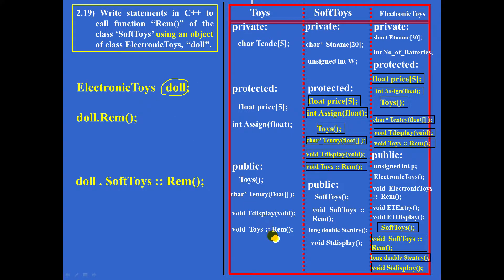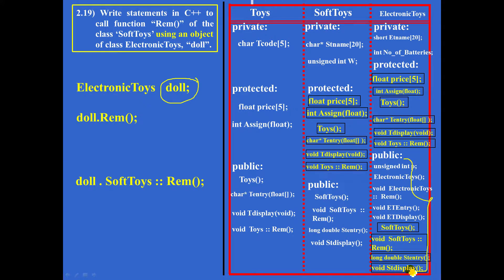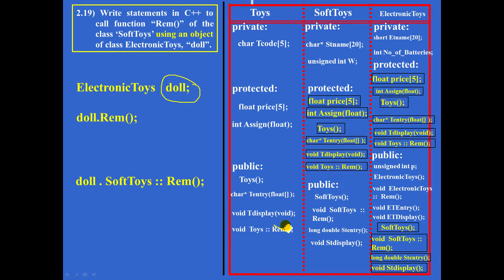Similarly, using doll, how can you call remarks of the class toys? You cannot call remarks of class toys. The reason is that using an object means the function must be in the public area of the class, and remarks of class toys is not in the public area. So using the object doll, you cannot call remarks of class toys, and if you try to call it, it results in a syntax error.